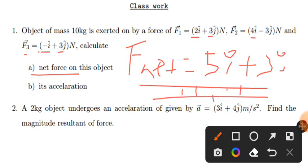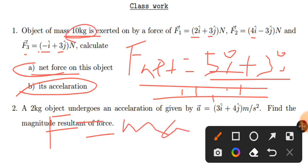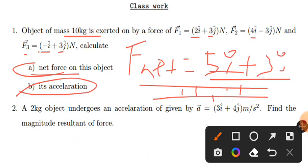Now let's find the acceleration. Acceleration vector is found using Newton's second law: force is equal to mass times acceleration. Mass is 10 kg. So acceleration equals force over mass.